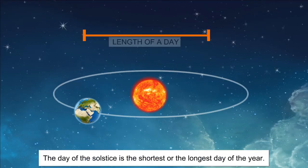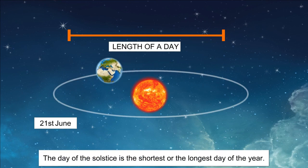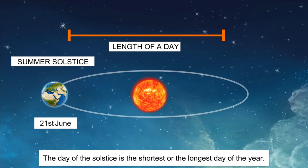In summer, the days continue to extend until 21st June in the northern hemisphere. 21st June is the longest day of the year in the northern hemisphere. It is known as the summer solstice. The term solstice means when the sun stands still. The length of the day slowly starts to decrease after the summer solstice.